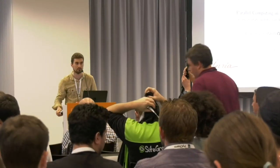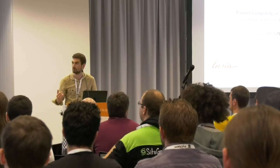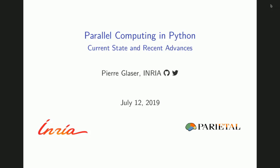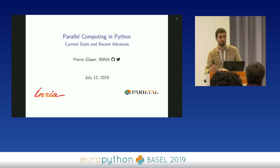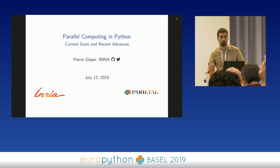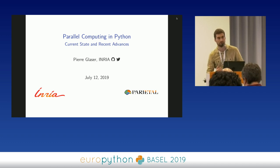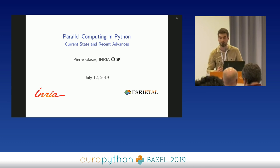My name is Pierre Glaser. I work at INRIA, which is a research institute in France. Most of my team does research in machine learning for neuroimaging data. But there is a small subset — actually, a team of NINJA — that work mostly on open source projects. My job is to improve the performance, among other things, of scikit-learn when it's used to do tasks in parallel: either multiprocessing, multithreading, or multi-machine.